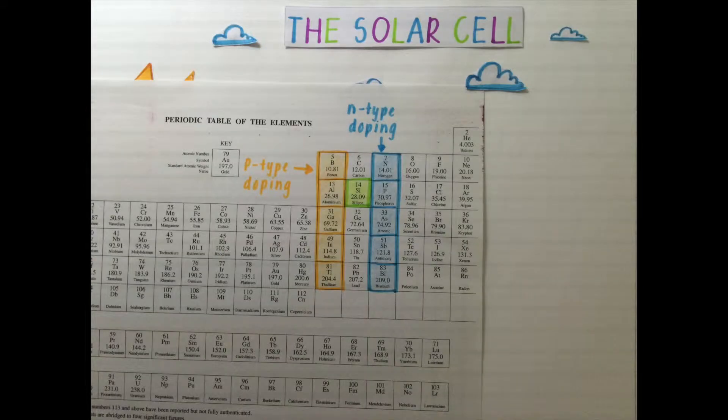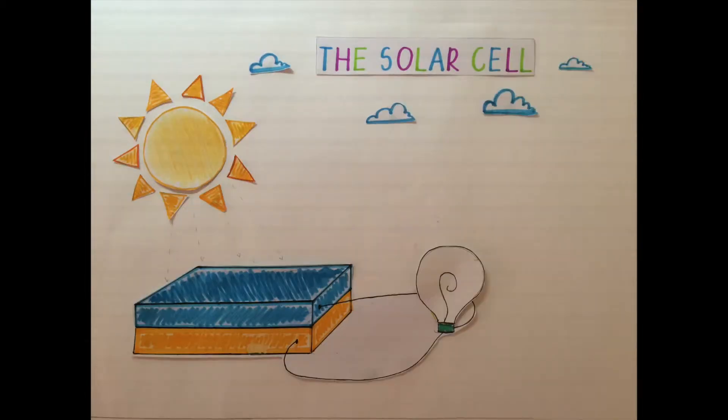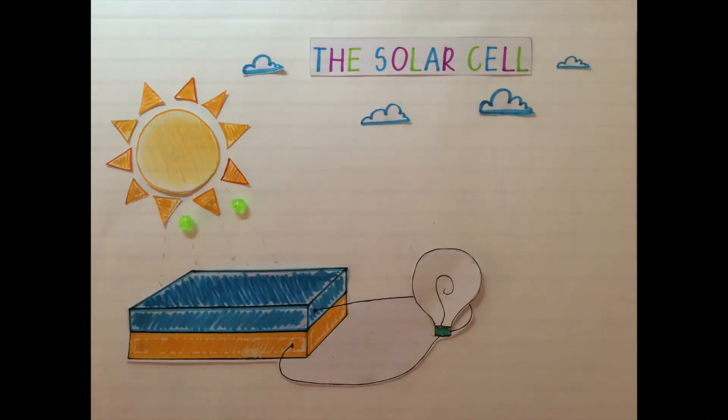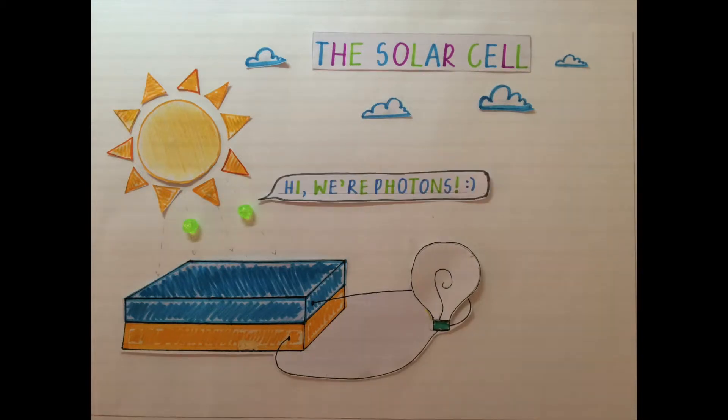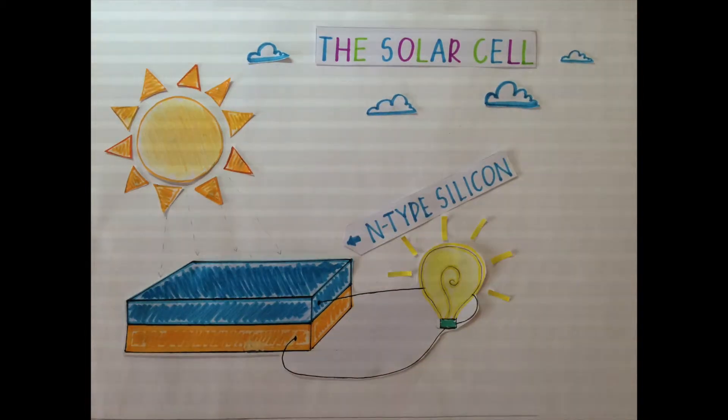So that the solar cell can transform light energy into electrical energy. The light globe is not on as there are currently no electrons flowing through the external circuit to do work. Fortunately, the sun emits light energy carried by photons which are absorbed by the N-type silicon.